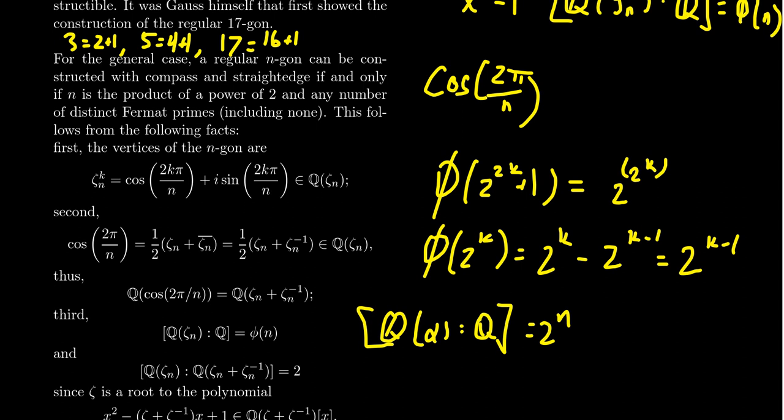Gauss was able to prove that you could construct the regular 17-gon. The shapes that we can do, like a triangle, 3 is a Fermat prime. We can do that. You can construct a square. A square is 2 squared. That's a power of 2. You can construct a pentagon because 5 is a Fermat prime. You can construct a regular hexagon because 6 is 2 times 3. That's a power of 2 times a Fermat prime.